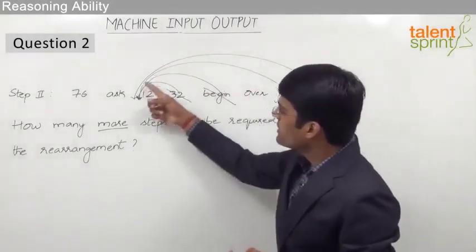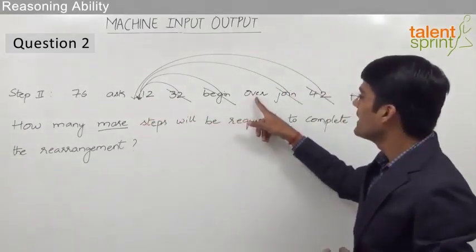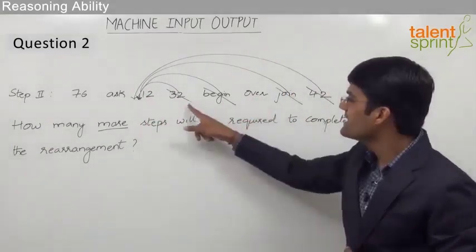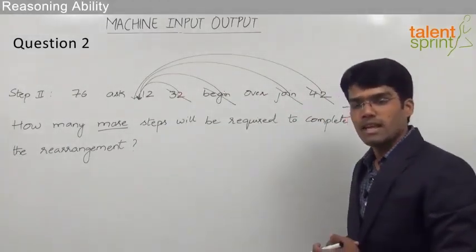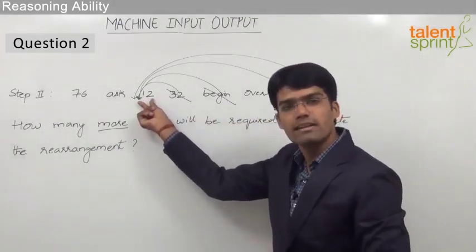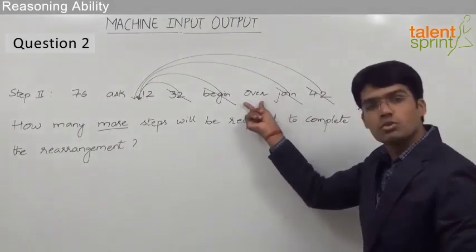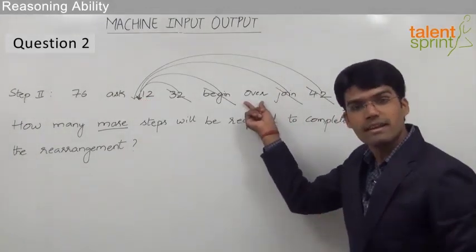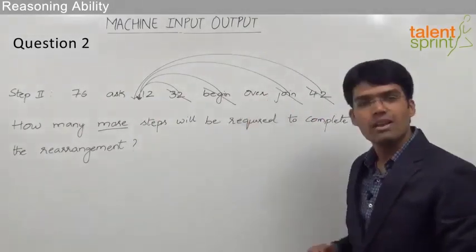Now after moving join to this position, the next position is occupied by 12 and then it is followed by over. As these elements have already been moved to their correct places, now we know that after join, the number required is 12 and that is already in its correct place. And after 12, we need to have a word and that should be over which also is in its correct place. So we need not disturb these two elements, that is 12 and over.